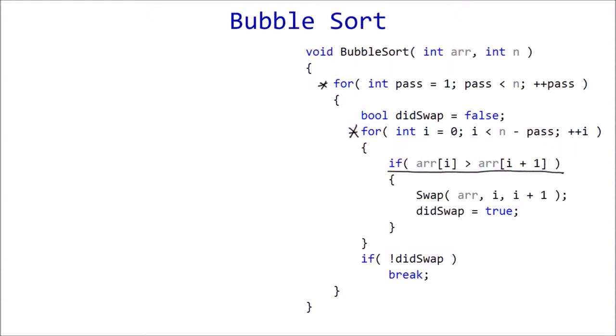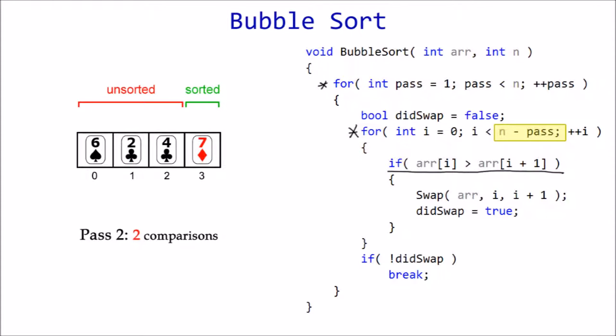How many times is the comparison statement executed? The fact that the loops are nested hints at n squared. But wait, n minus pass causes the inner loop to execute fewer and fewer times the more passes we make. Why? Because each pass results in the unsorted section shrinking by one element. The question now is how to express this in terms of n.